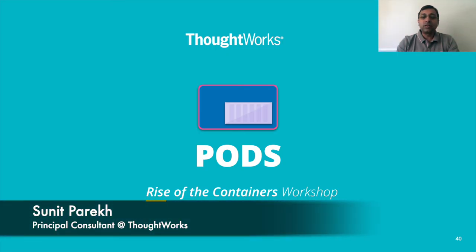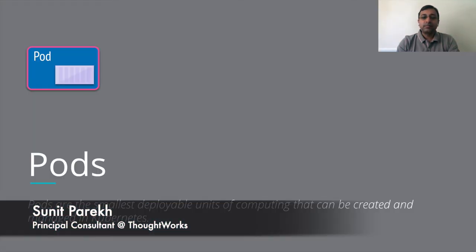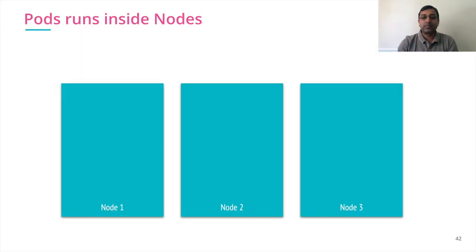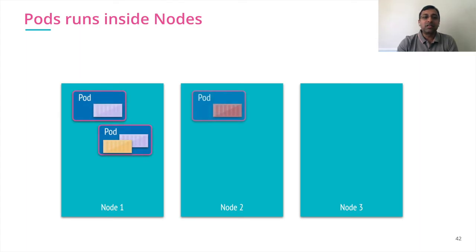In this session, we are going to look into pods. Pods are the smallest deployable unit that can be created and managed within Kubernetes. Pods are the objects that run inside nodes, and you can have multiple pods running inside one node.